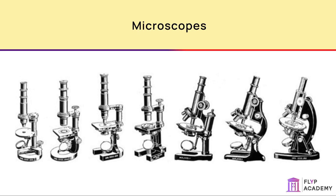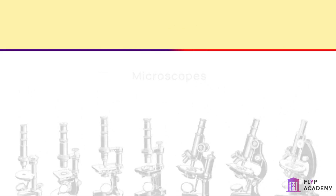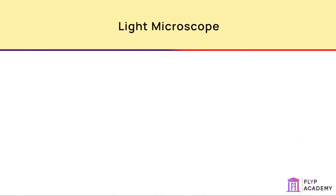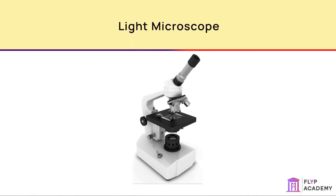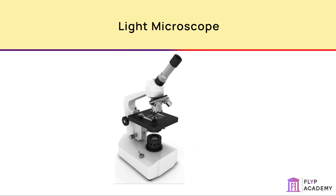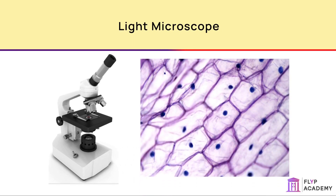There are two types of microscope that you need to learn about: the light microscope and the electron microscope. The light microscope is the type used in schools and many laboratories. It uses visible light and a series of lenses to magnify the object so that its structure can be seen. When something is magnified, it produces an image that is bigger than the original object so that smaller details can be seen.